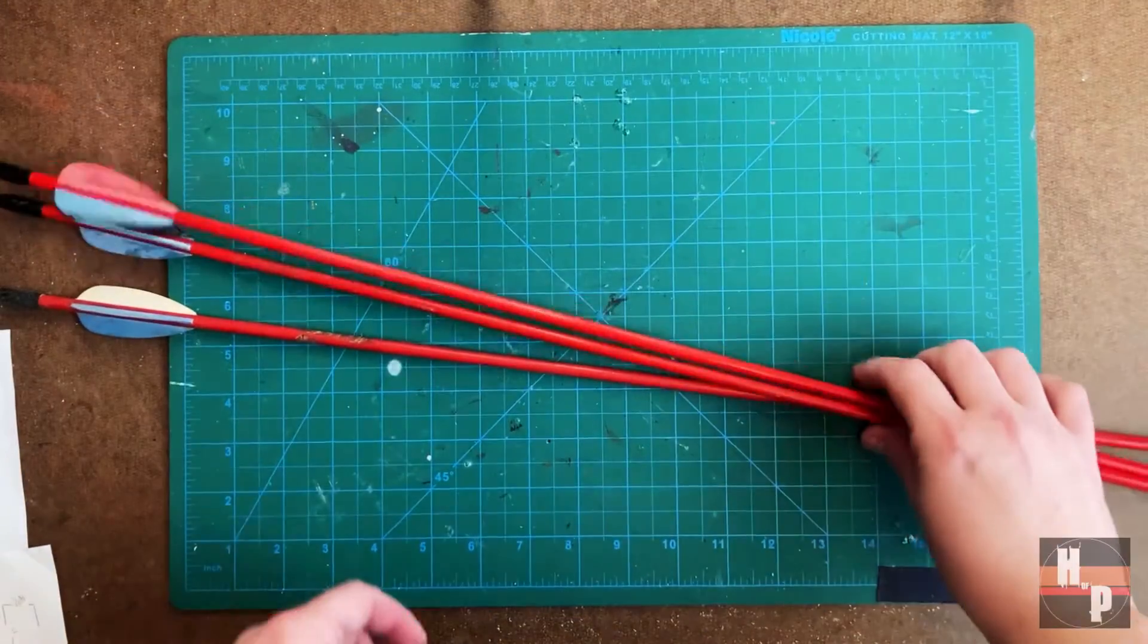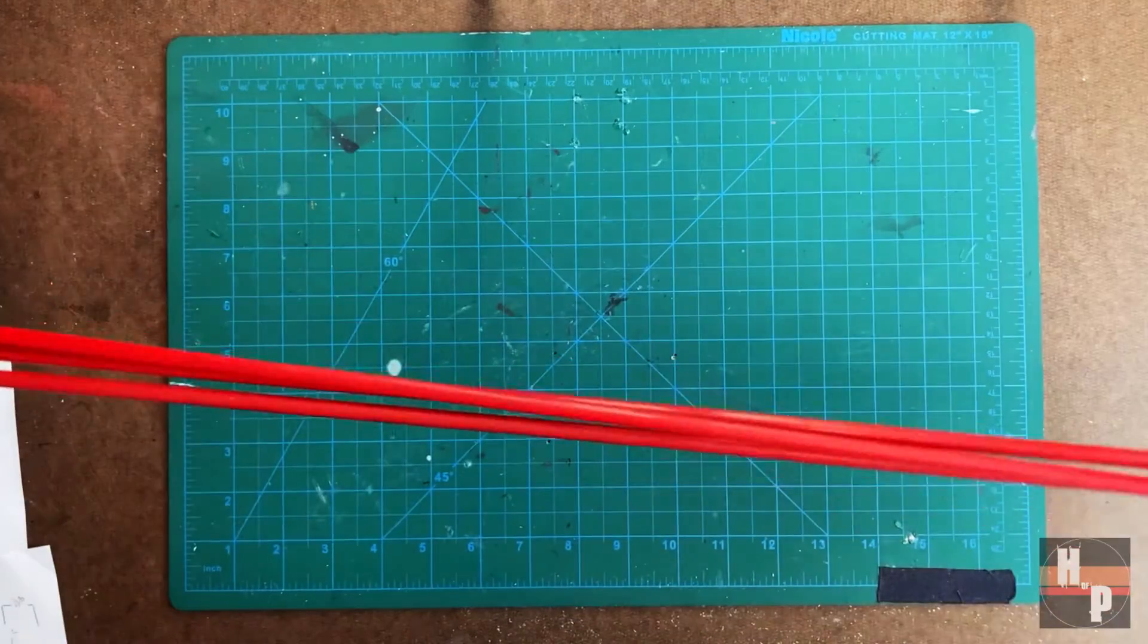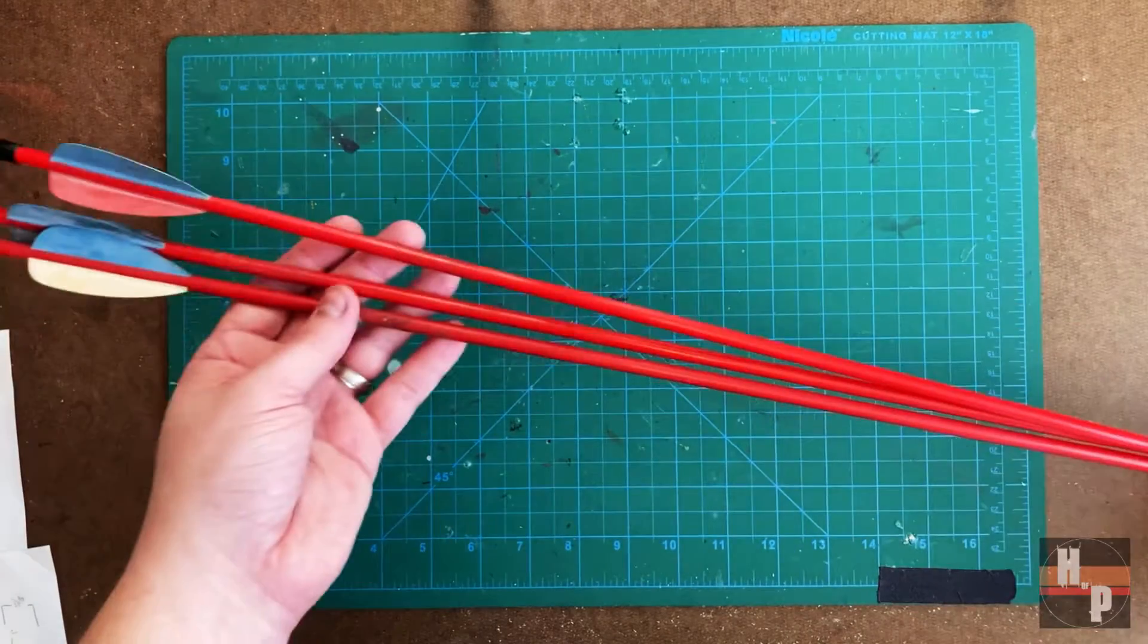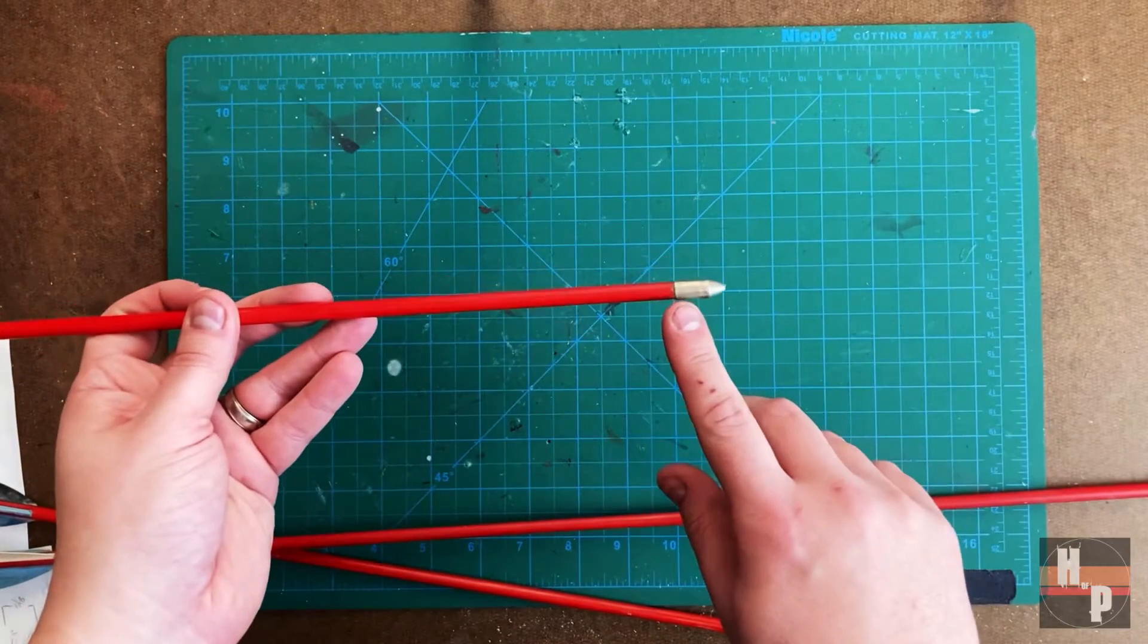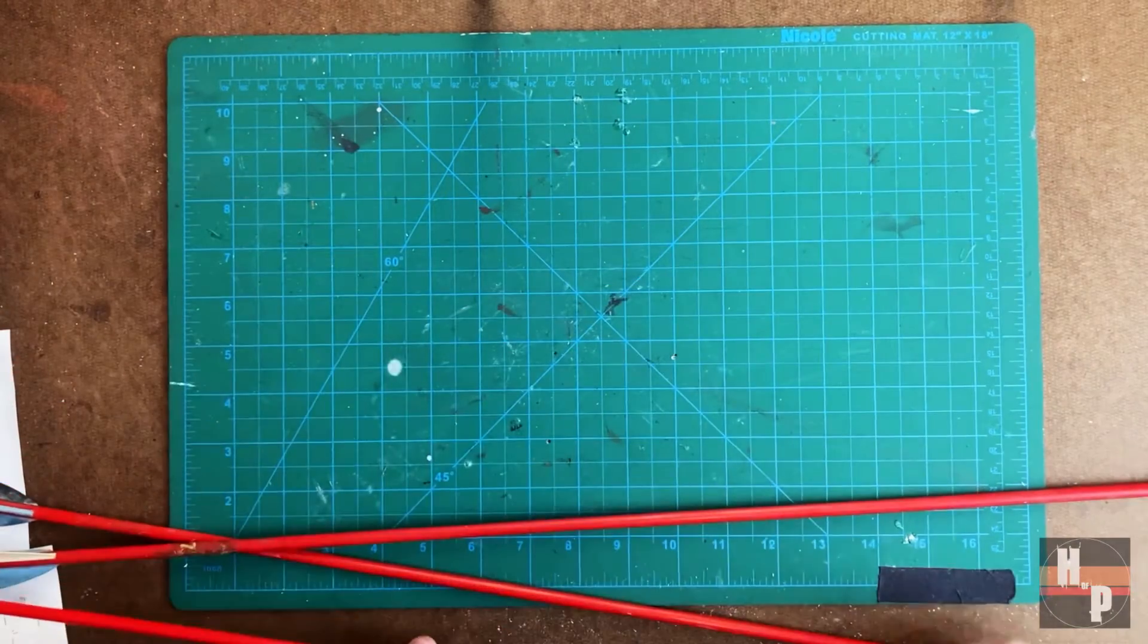While the tips were printing, I modified three arrows which I picked up at the thrift store. Each arrow has a metal tip which I wanted to remove so I could attach the new arrowheads.